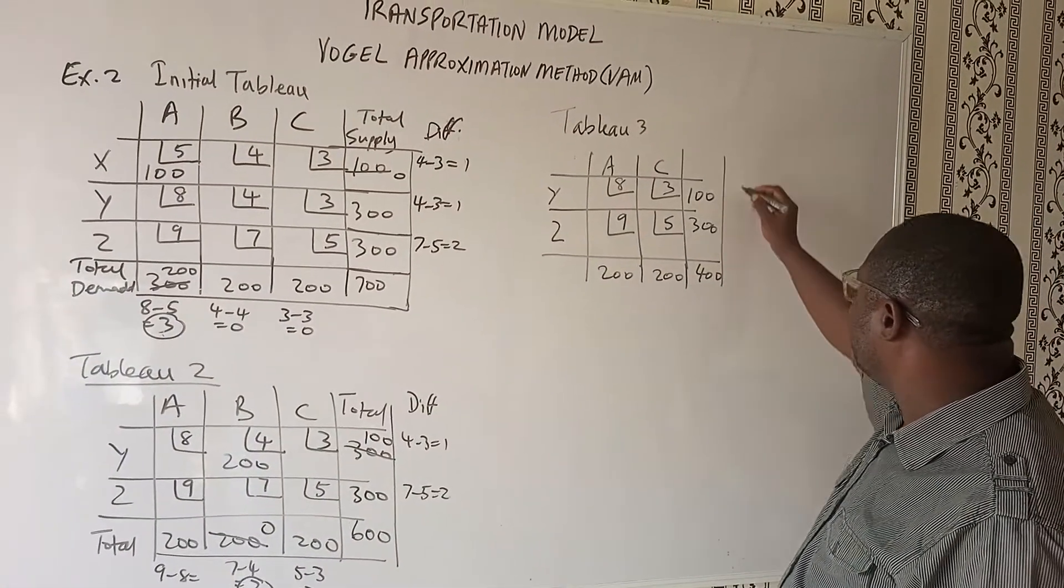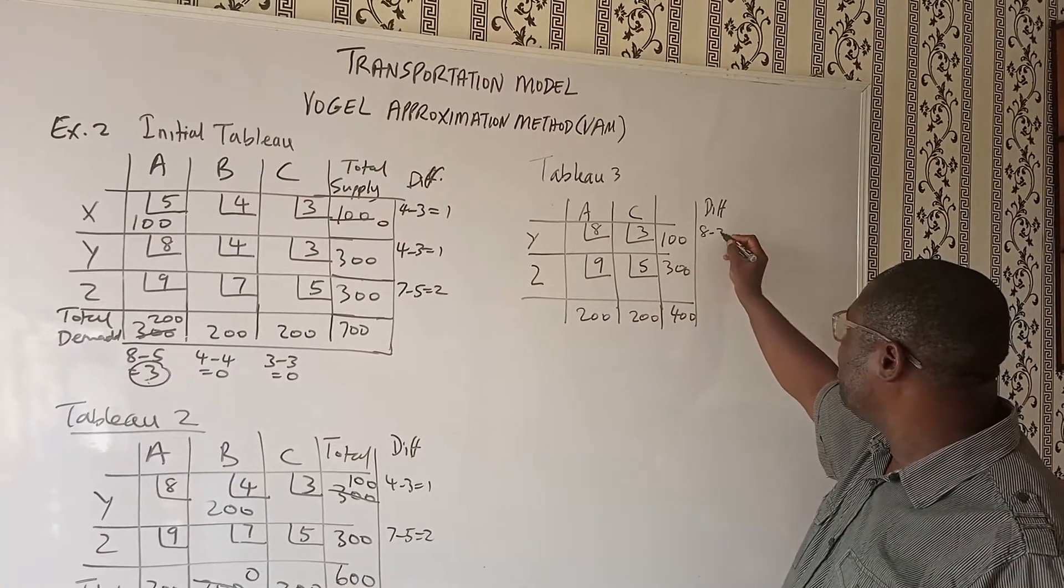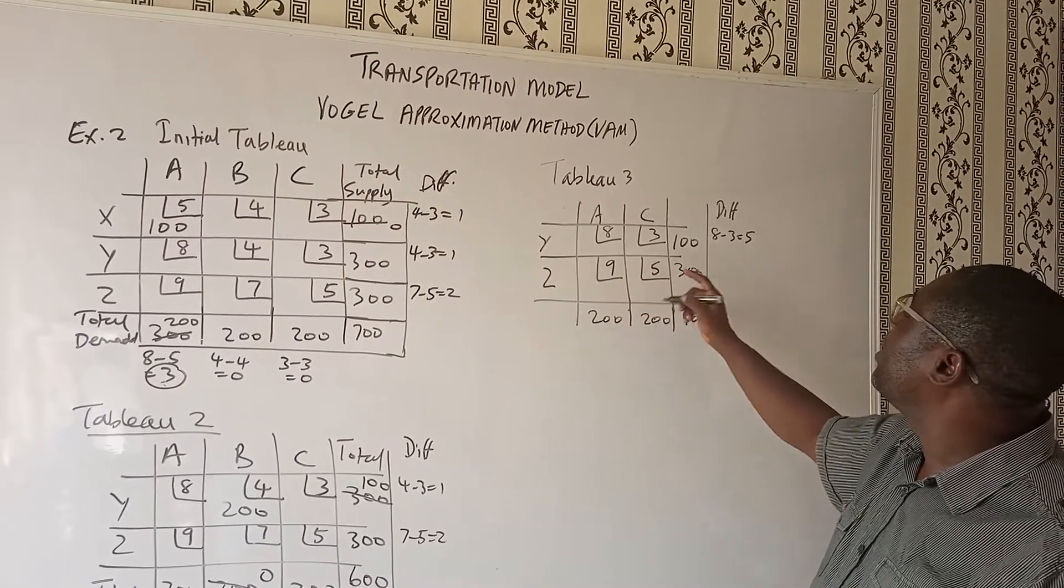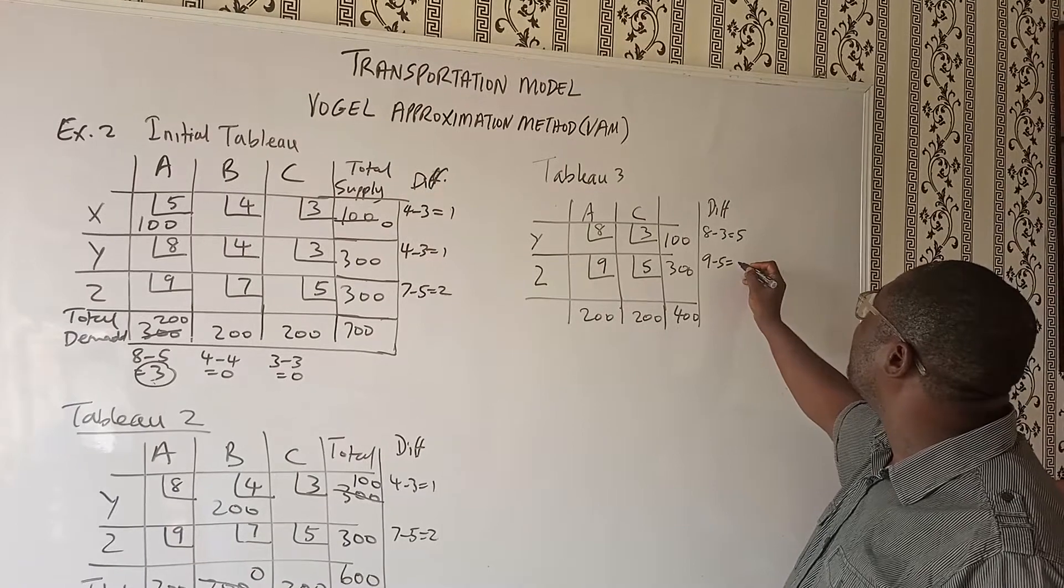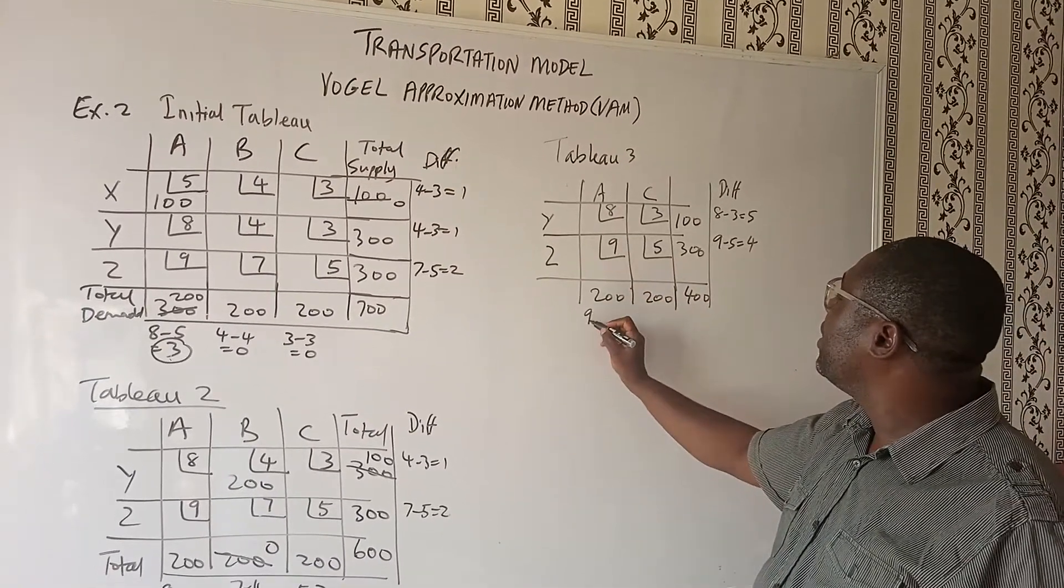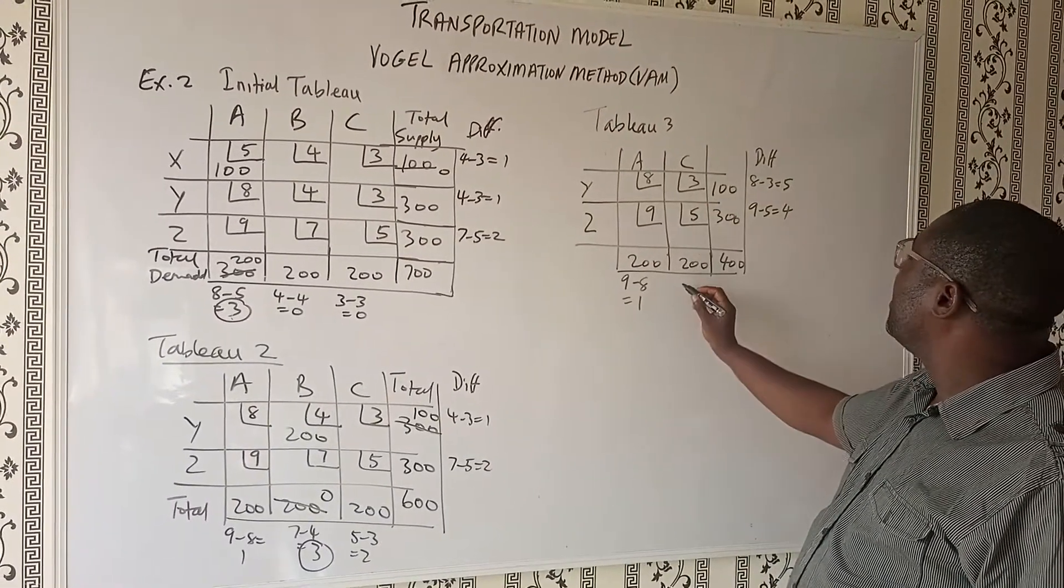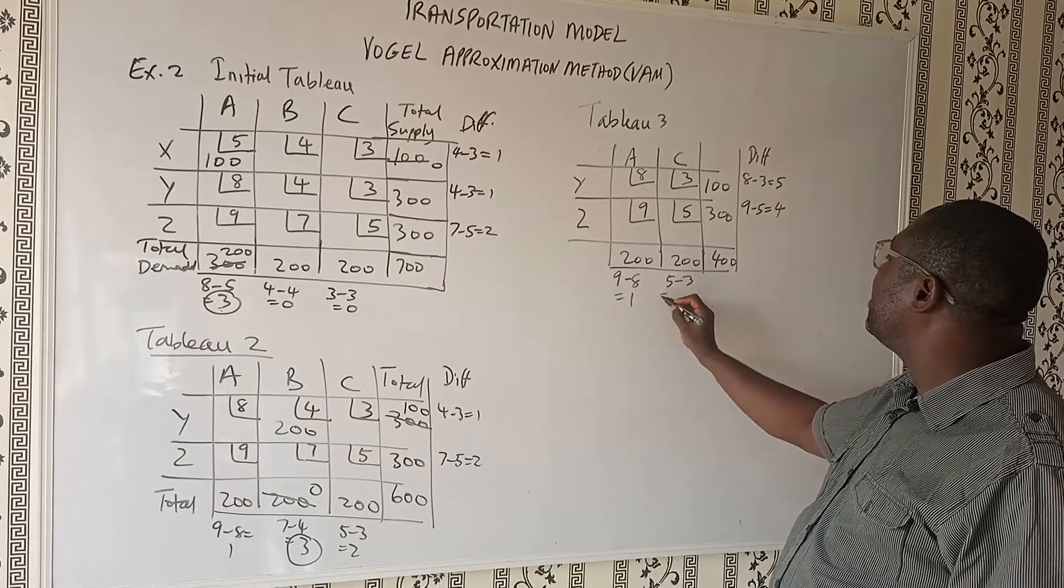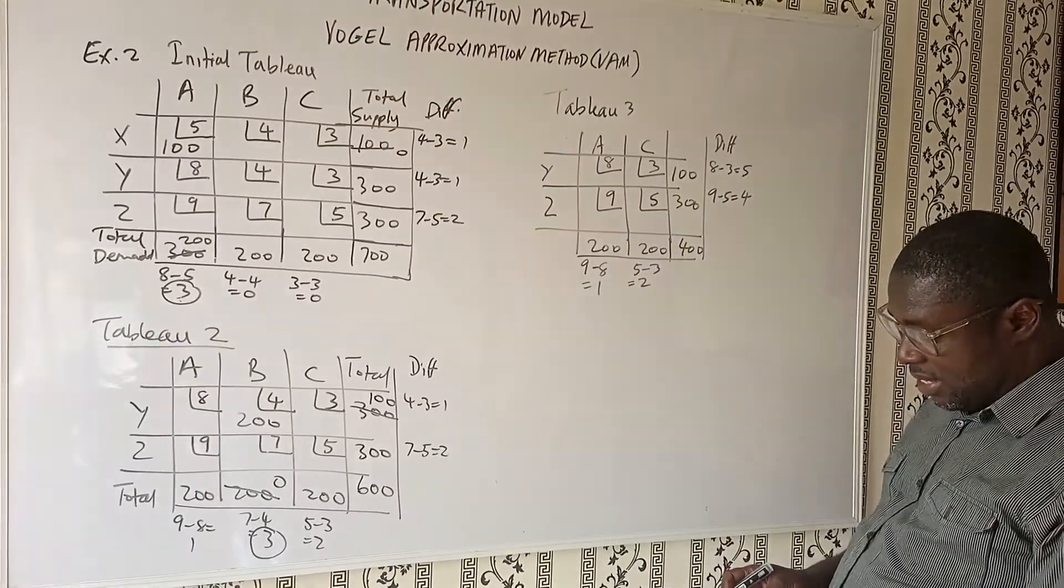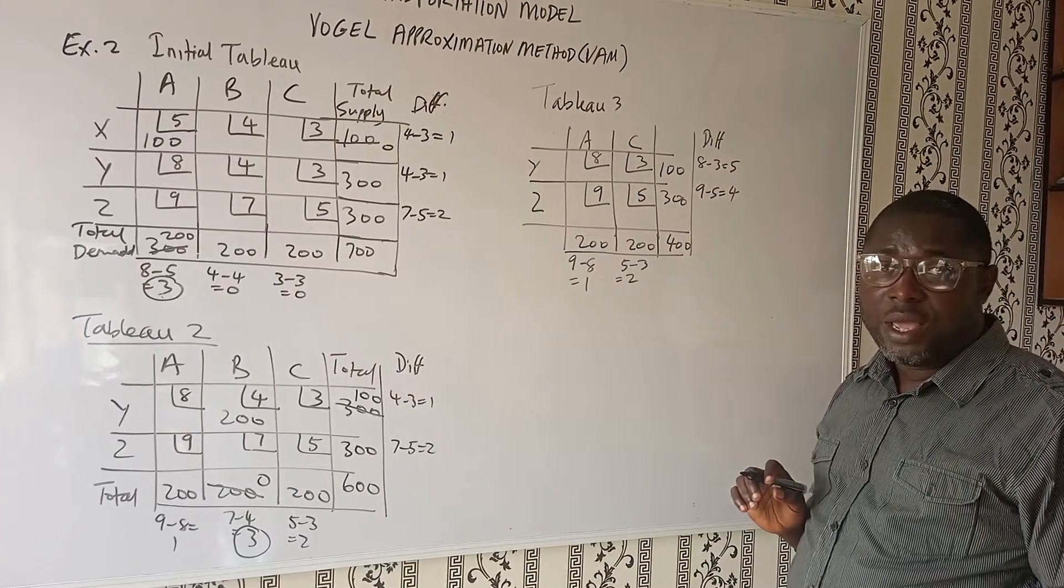We should do our difference. So we find the difference in the columns and the rows. This is 8 minus 3, that gives us 5. 9 minus 5 will give us 4. How about here? We have 9 minus 8 gives us 1 and here gives us 5 minus 3 gives us 2. So which one is the focal row here?